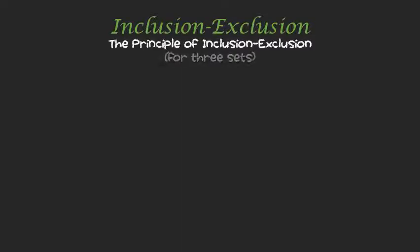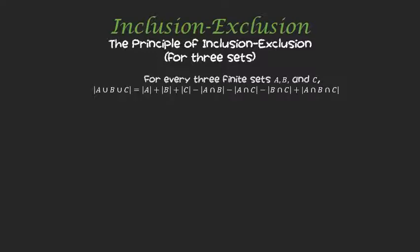In the last example we had two questions on the survey, but what if there were three questions? Could we figure out how many people answered yes to all three? So let's generalize our principle for two sets to three sets. For three finite sets A, B, and C, the cardinality of their union is: add up each one individually, subtract off the intersection of every two sets, and add on the intersection of all three.